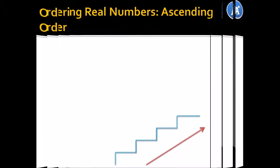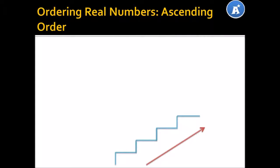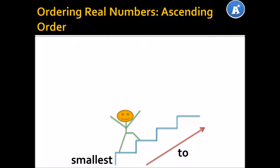Let's look at ascending order. Have you ever had to climb up a tall staircase? It can be a lot of work, can't it? Ascending order is simply climbing from the bottom to the top — you go from the smallest or the lowest to the largest or the highest.